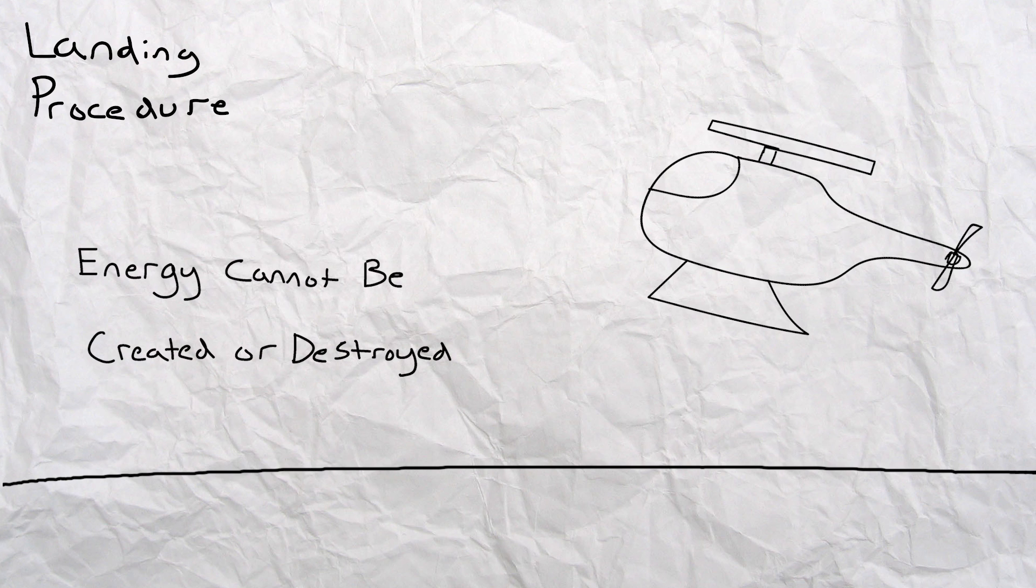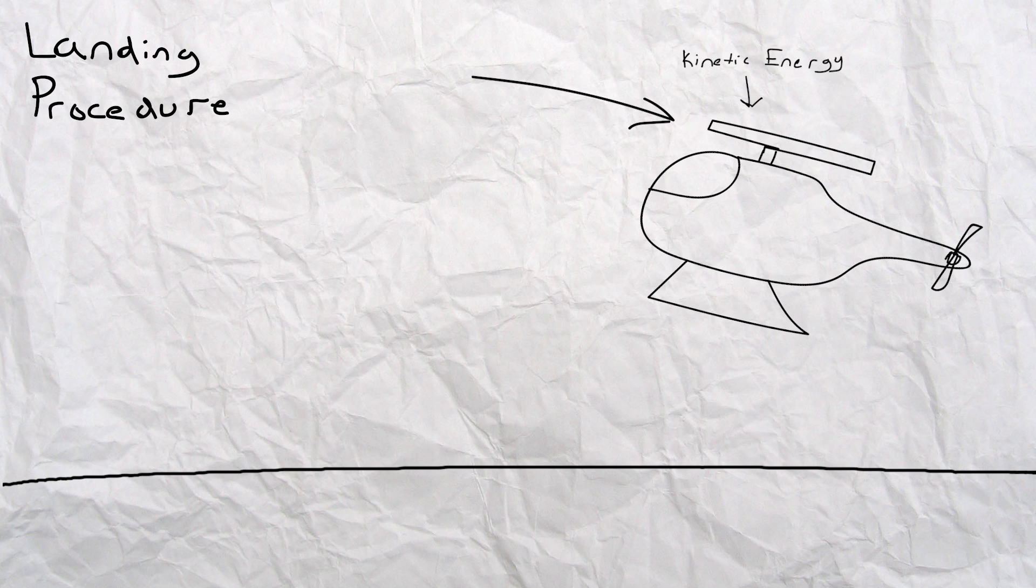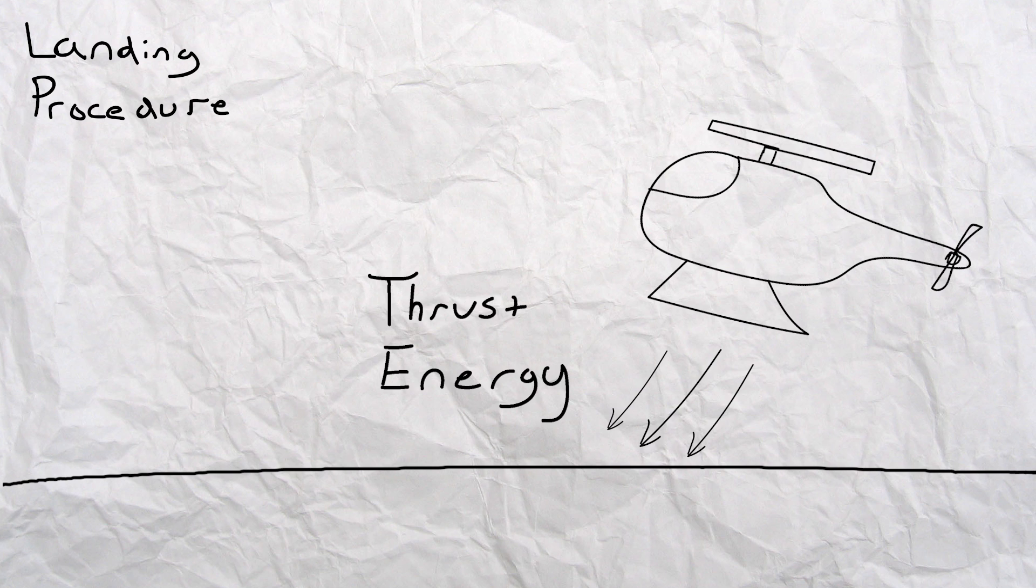Remember that the law of conservation of energy states that energy cannot be created or destroyed. So basically, since the wing is not needed anymore to keep the helicopter in flight, the pilot transfers the kinetic energy that was in the wing to keep it moving into thrust energy to slow the helicopter down to a safe landing speed.